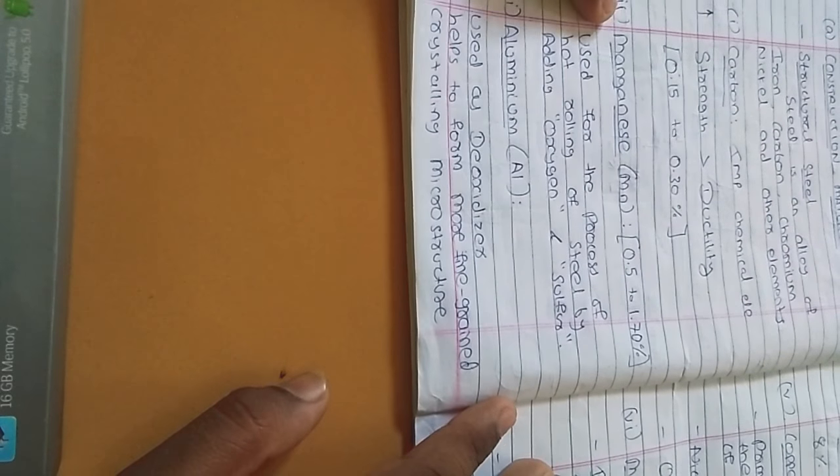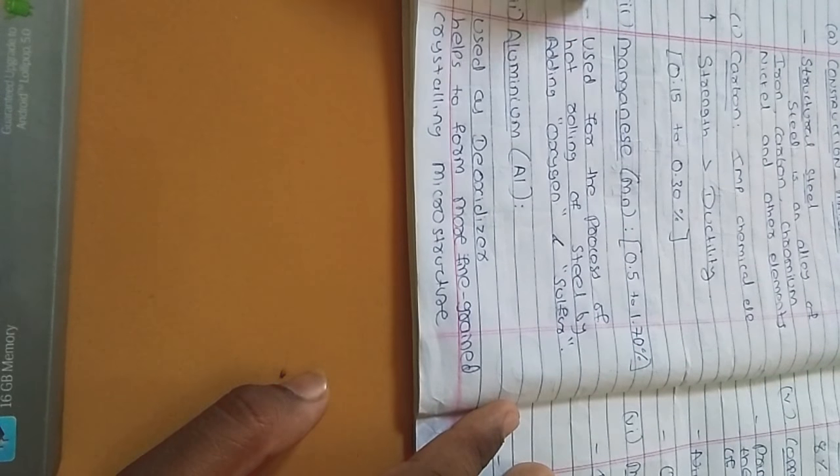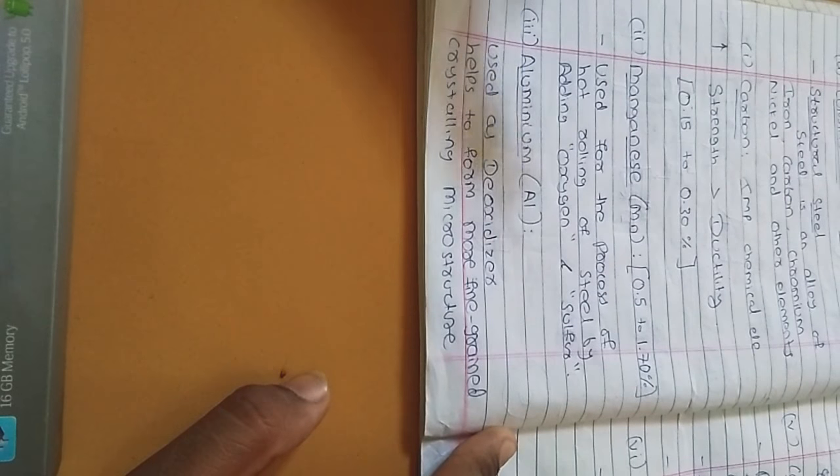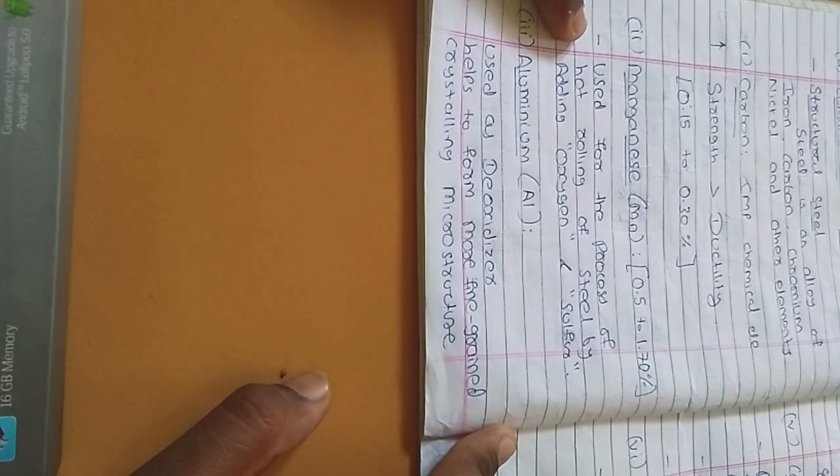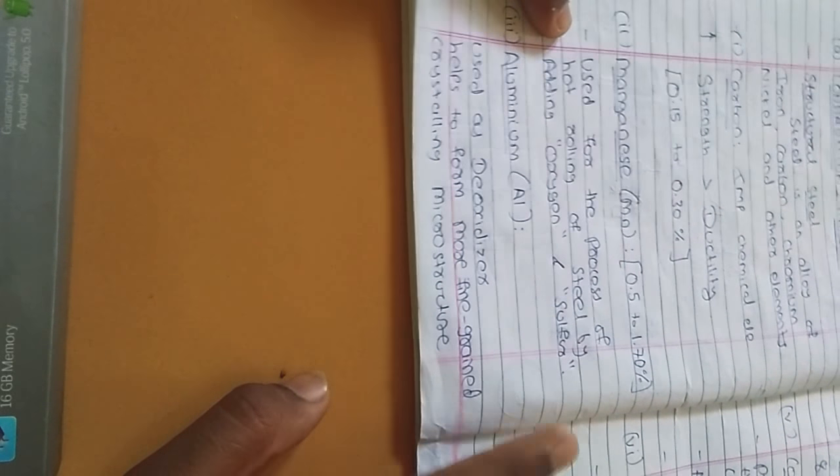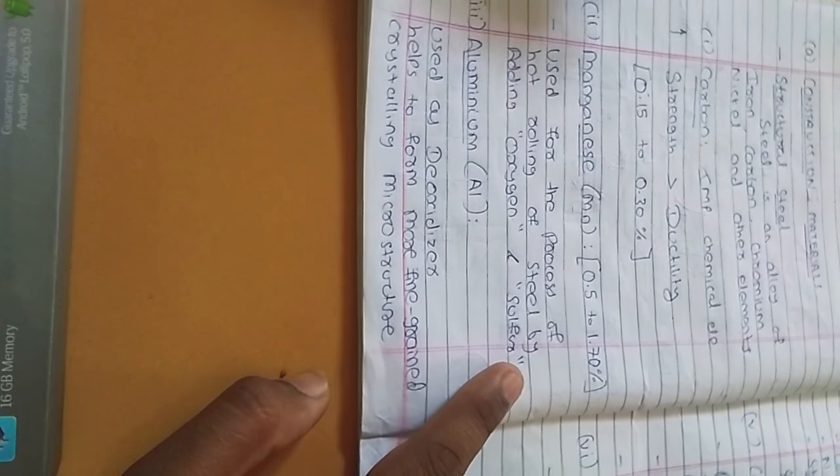Now manganese. Manganese is used for the process of hot rolling of steel by adding oxygen and sulfur.